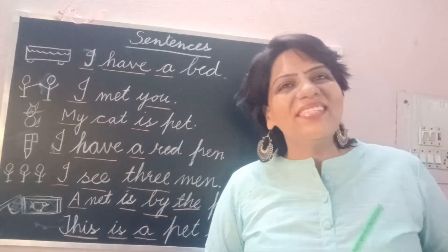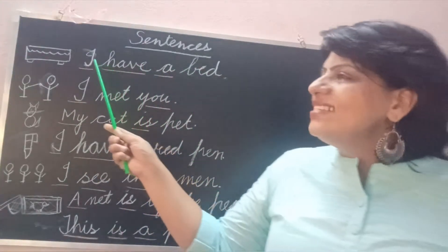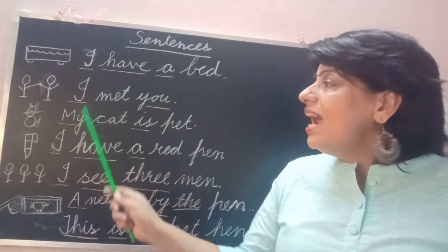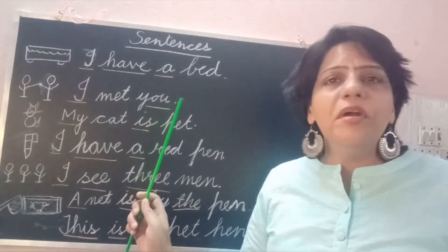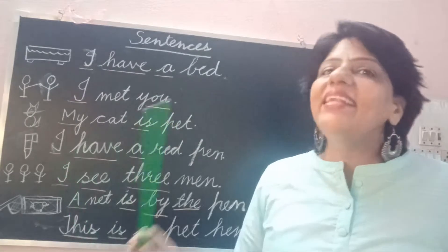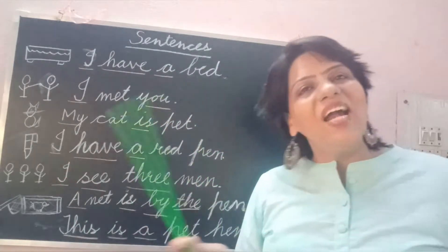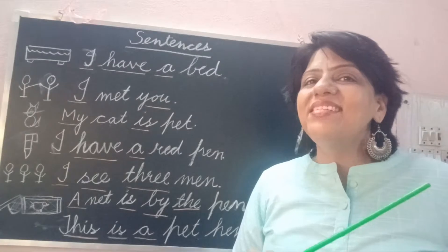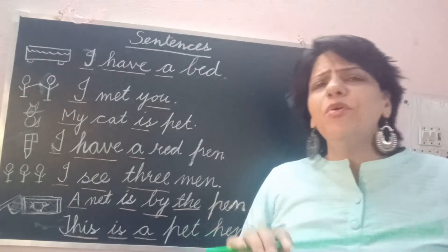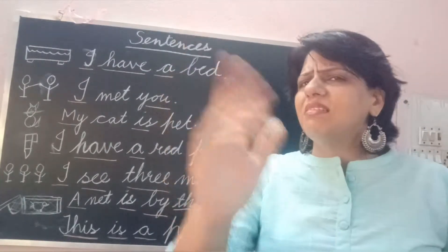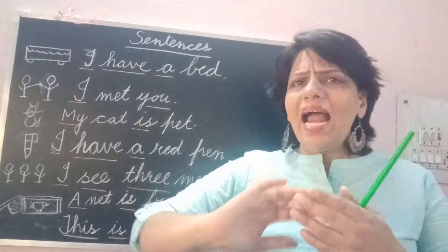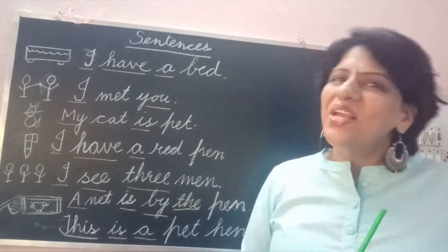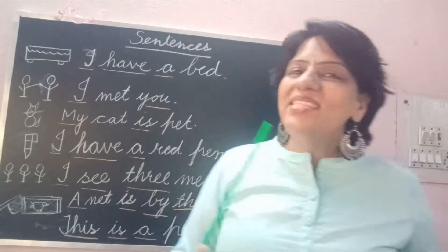Now start reading sentences. I have underlined a few words — whichever word I have underlined, these are sight words. We all know the rule to read sight words: we have to read them as they are. We don't need to add the sound or mix the sound. Okay, now start reading.